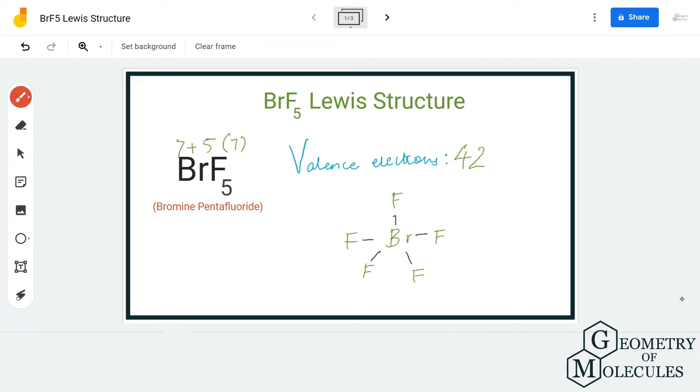Out of 42, we are now left with 32 valence electrons. Start placing these electrons around fluorine and bromine atoms. As each fluorine atom is sharing one valence electron of the bromine atom, it will have a complete octet, so you have to place six valence electrons around each fluorine atom. Doing that, we will be left with two valence electrons.